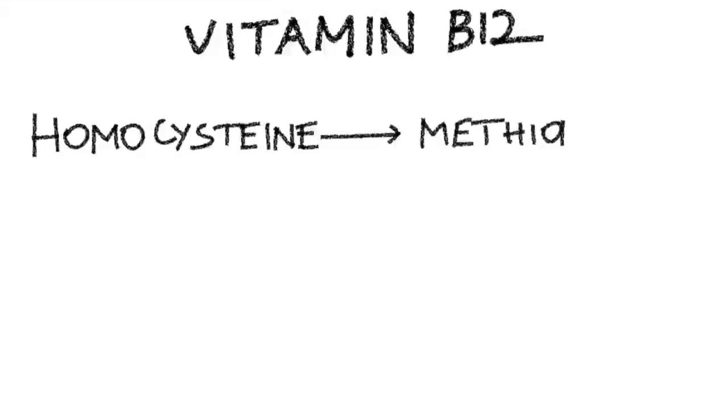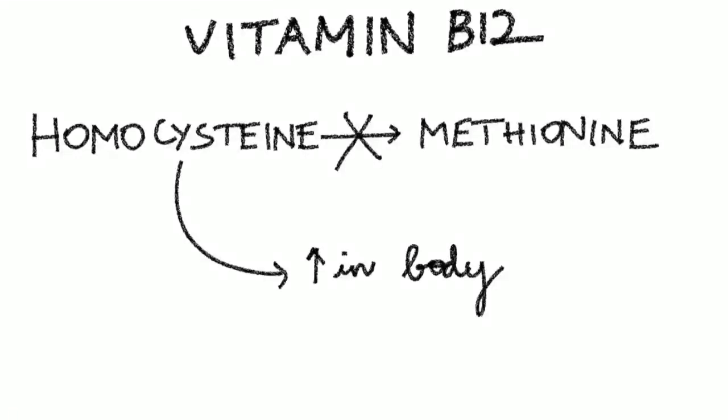Now, vitamin B12 is helpful in various reactions in the body. For example, in conversion of homocysteine to methionine. In vitamin B12 deficiency, homocysteine will be accumulated in the body, so methionine will not be formed; instead, homocysteine levels will be elevated in the blood. This leads to atherosclerotic conditions like myocardial infarction and stroke, and this is one of the common causes for myocardial infarction and stroke in young individuals.